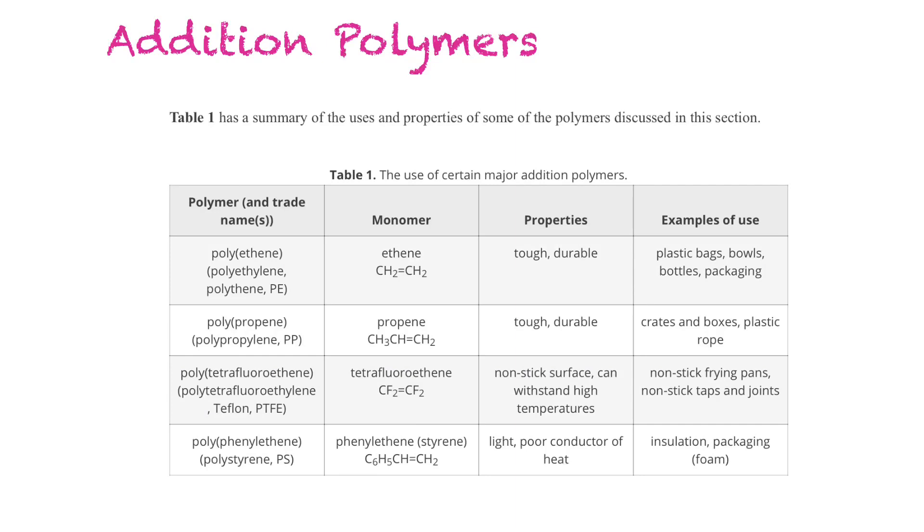And this table demonstrates some of the polymers and their trade names. So polyethene or polyethylene or polythene or PE. The monomer is ethene. It's a tough, durable polymer or plastic. We use it in plastic bags, bowls, bottles, and packaging.